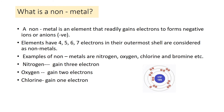Now, what is a non-metal? A non-metal is an element that gains electrons to form negative ions or anions. Non-metals are just opposite to metals — metals lose electrons, non-metals gain electrons. Because the number of electrons becomes more, non-metals form negative ions. Elements with four, five, six, or seven electrons in their outermost shell are considered as non-metals.